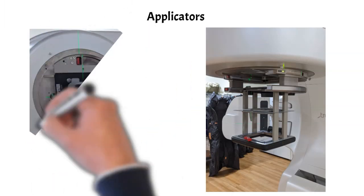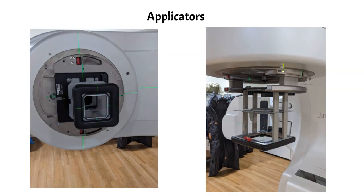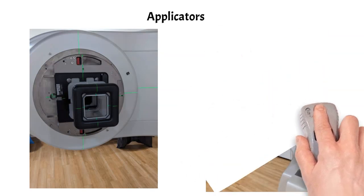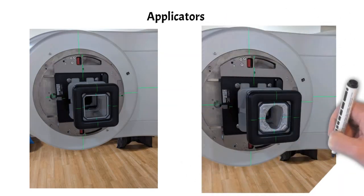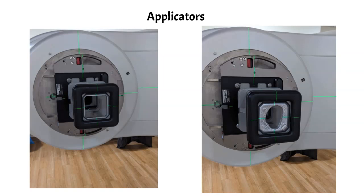And on the left now, I will rotate the gantry 90 degrees and give you a beam's eye view of what they look like. This has an open cutout placed in there that defines the field size for this applicator. On the right, this has a Cerrobend cutout in there, so the physician will draw that shape, and then we will create a cutout with that desired shape.